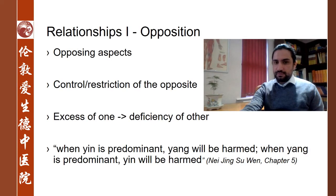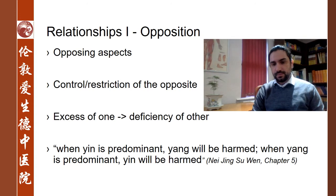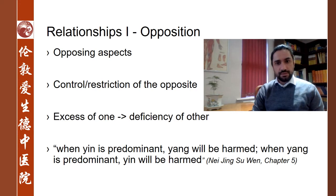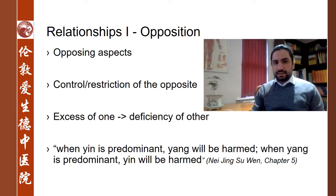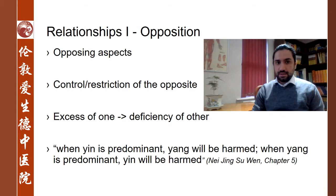There are five different relationships between yin and yang. The first relationship is opposition. These two principles oppose one another. We can easily imagine fire and water — if one of them is in excess, the other is inhibited, controlled, restricted. This is the fundamental understanding of the opposition of yin and yang: one restricts and controls the other.